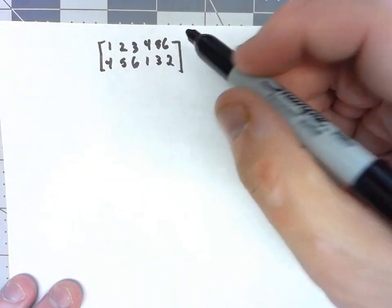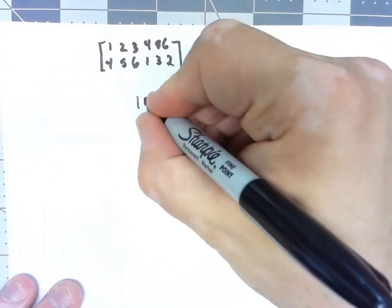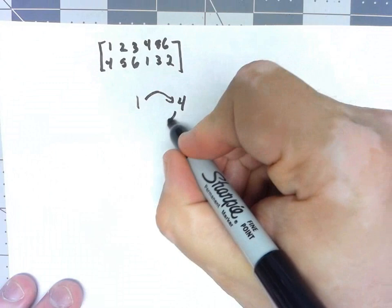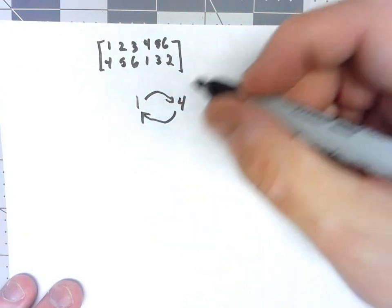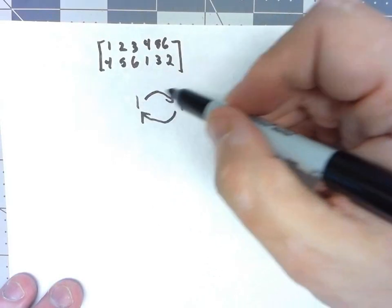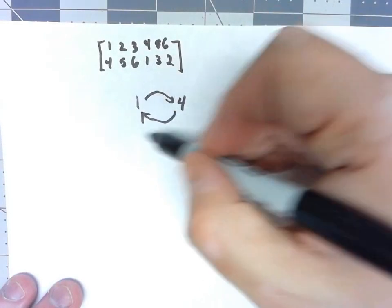Let's notice something. 1 is going to 4, and 4 is going to 1. Those two things just kind of bounce back and forth. We're never getting out of some permutation of just 1 and 4.